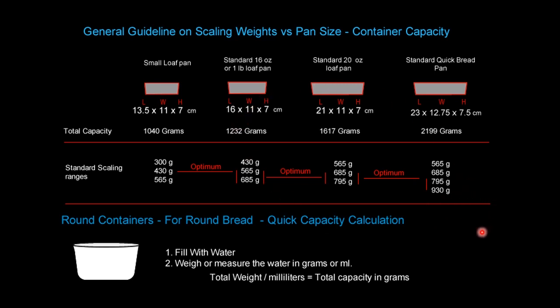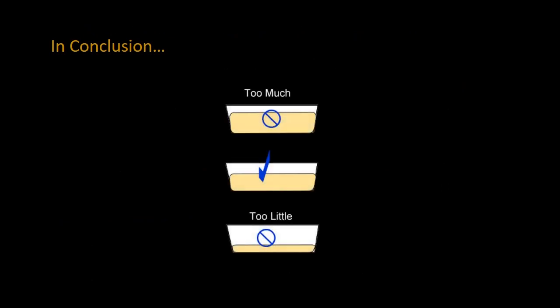And in conclusion, let's just keep in mind and remember that the right amount of dough for the right size pan is very important. Too much and you've got big bread or you have to pull it and bake it off before it's completely proofed out properly.